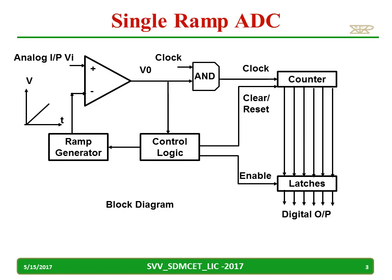This is the block diagram for the single ramp A to D converter. Now let us consider: given the input as 4 volts, we are supposed to get the output as binary 100. How this 4 volt is converted into binary 100, we are going to discuss in this video.